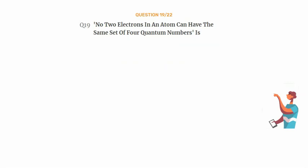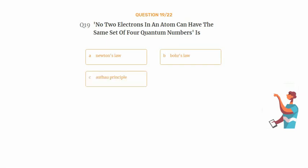Question number 19. No two electrons in an atom can have the same set of four quantum numbers is. Option A: Newton's law. Option B: Bohr's law. Option C: Aufbau principle. Option D: Pauli's exclusion principle.